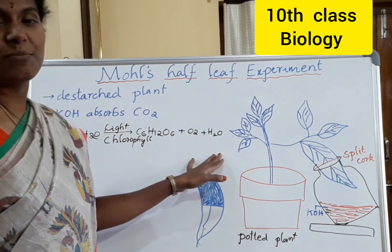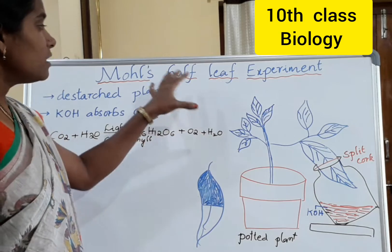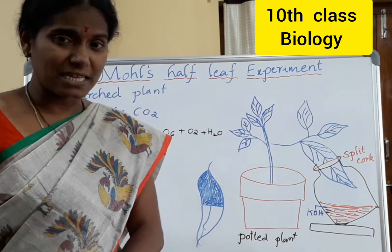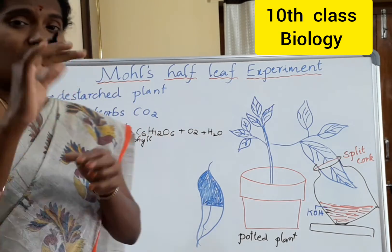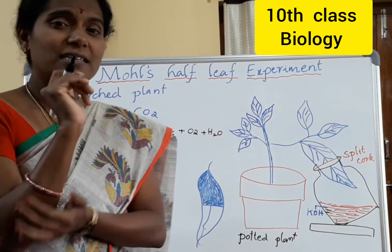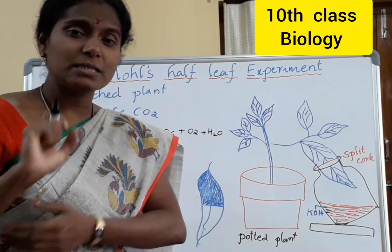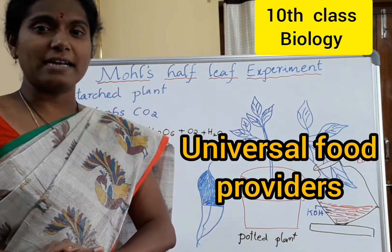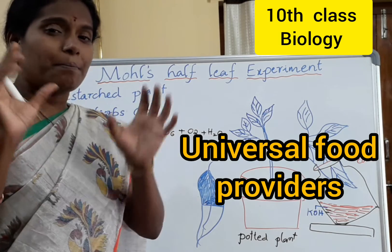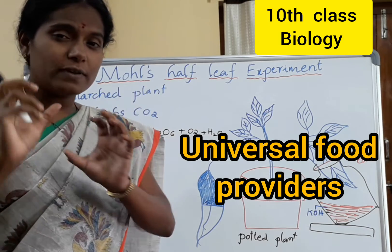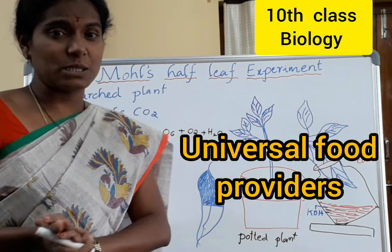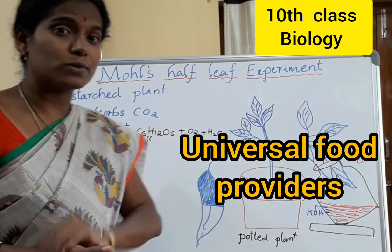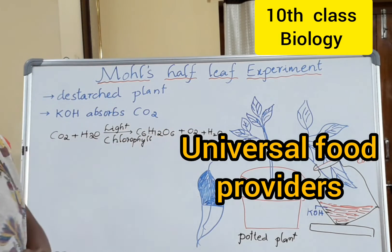In that chapter, nutrition in plants — plants are the ones known as universal food providers. Plants are the ones that produce food for all organisms by the process of photosynthesis.